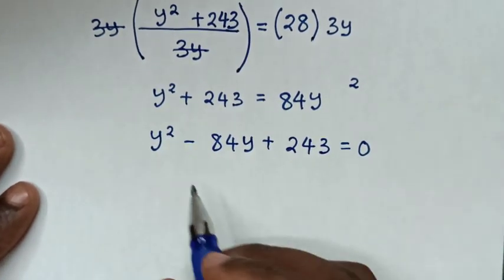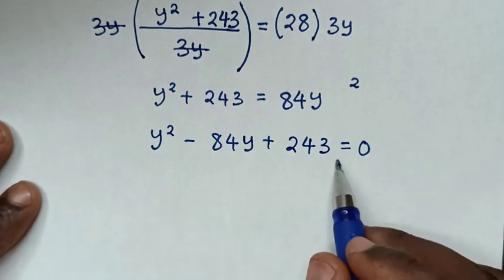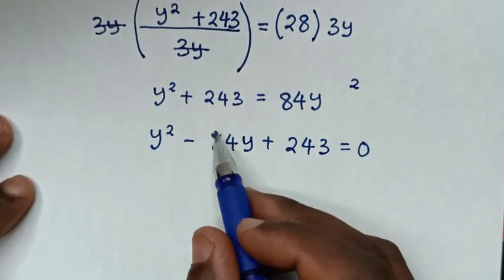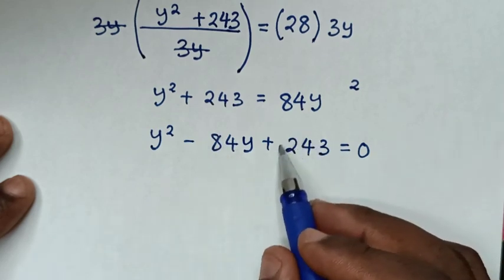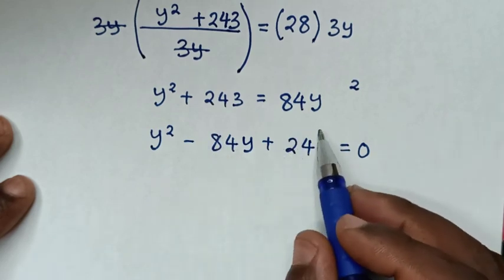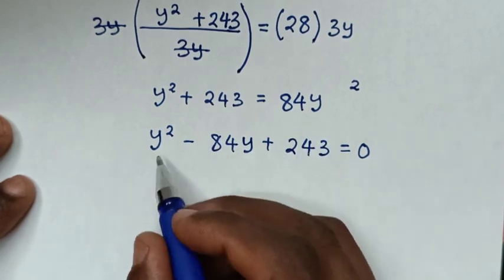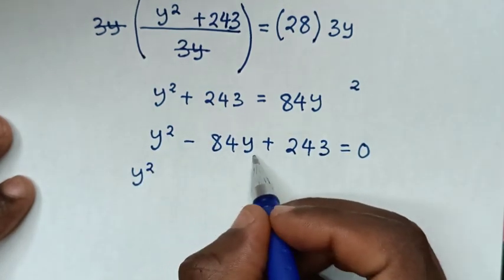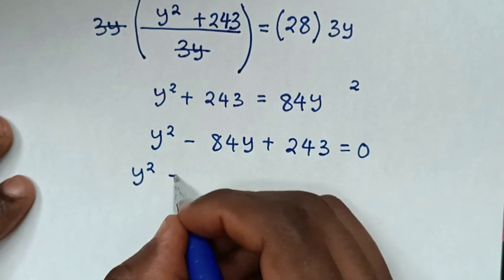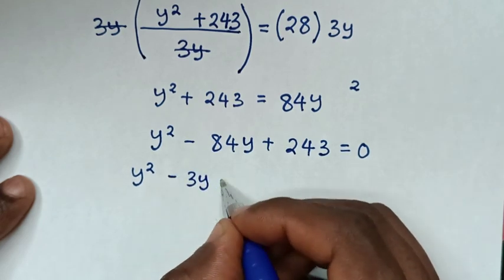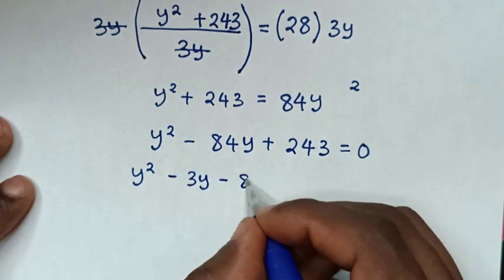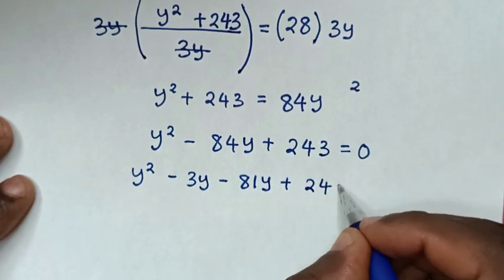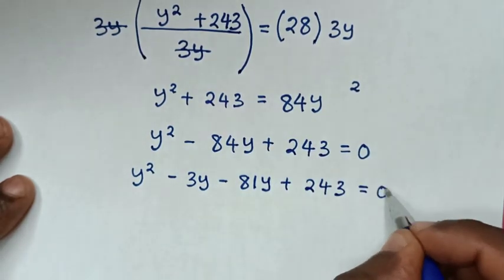We will solve this quadratic equation by grouping and factorization, where the sum is negative 84 and the product is 243. So negative 84y is split as negative 3y minus 81y, giving y squared minus 3y minus 81y plus 243 is equal to 0.